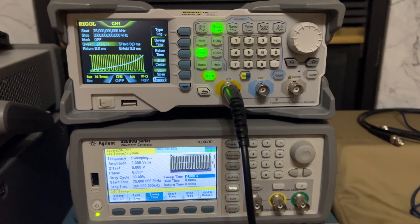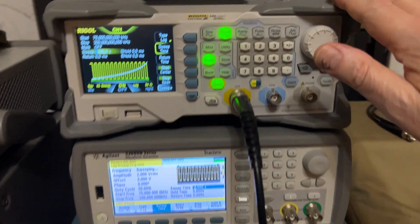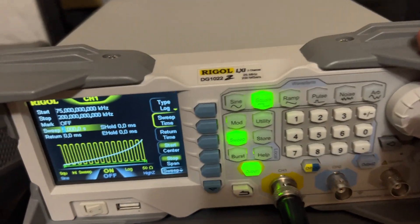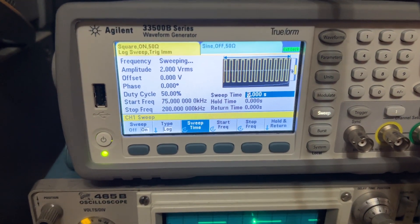I wanted to show a quick comparison of the rising edge for this Rigol DG1022Z versus an Agilent 3500B series.